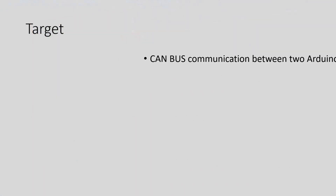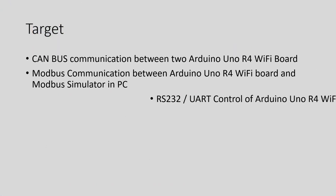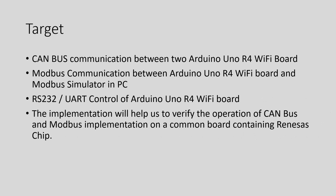The targets of this project are: 1. Set up CAN bus communication between two Arduino UNO R4 Wi-Fi boards. 2. Set up Modbus communication between an Arduino UNO R4 Wi-Fi board and a Modbus simulator on PC. 3. Set up RS-232/UART control of the Arduino UNO R4 Wi-Fi board.